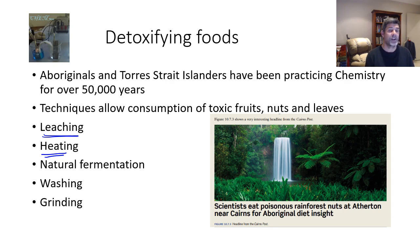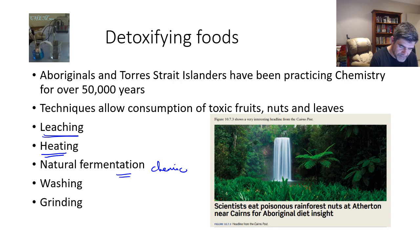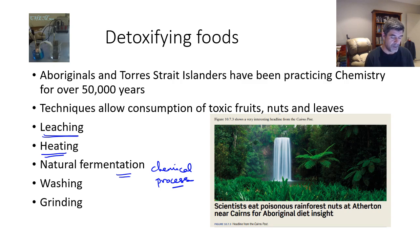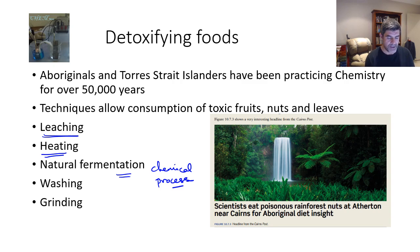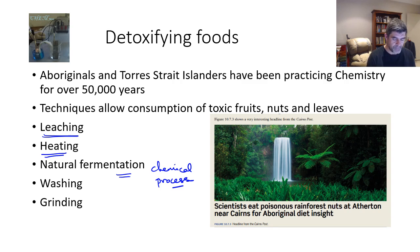There is also chemistry like natural fermentation. Fermentation is actually a chemical process in which natural fungi in particular can be used to anaerobically break down sugars into ethanol and carbon dioxide. This also changes the chemical nature of the chemicals present in a particular food source.